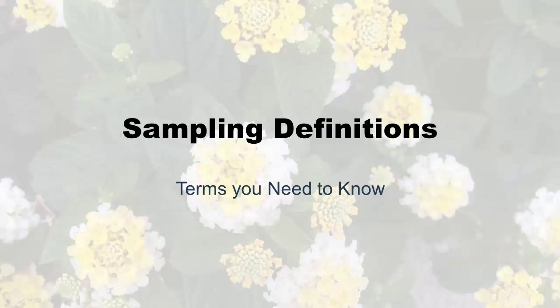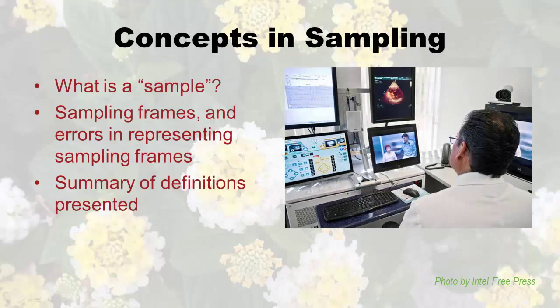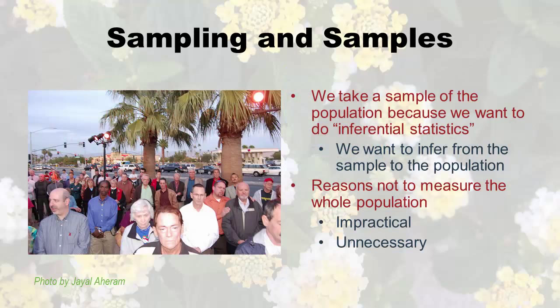Let's start with some sampling definitions. What is a sample? We're going to revisit that concept from the previous lecture, talk about sampling frames and what errors mean and errors of sampling frames. We take a sample of a population because we want to do inferential statistics — we want to infer from the sample to the population.